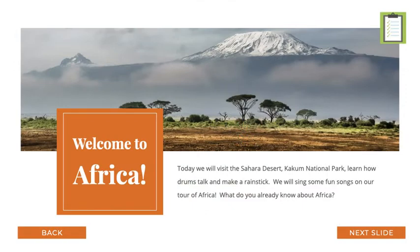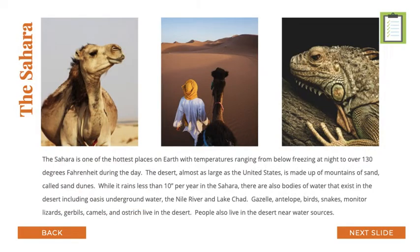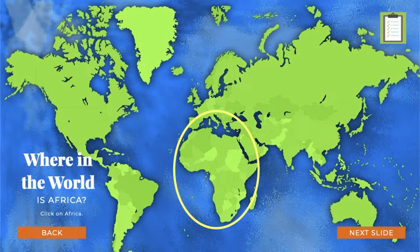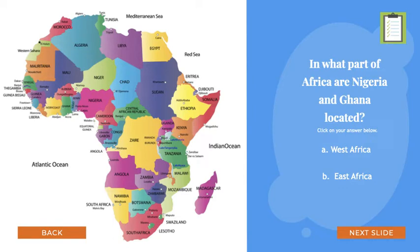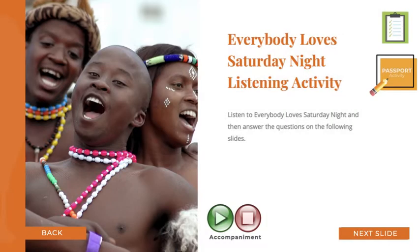Today we are going to look at a sampling of slides from the Africa chapter. Using the slides in this program takes students on a virtual trip to the country. We want students to know where in the world they are, so they first find it on a map, then answer country-specific questions, such as: In what part of Africa are Nigeria and Ghana located? Students associate indigenous instruments with countries through repetition and listening. Listening activities and corresponding quizzes are included in each chapter.